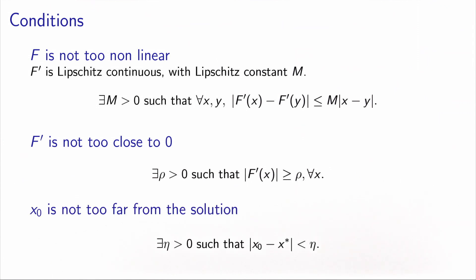The last condition says that the method will work if we start relatively close to the solution — meaning there exists a neighborhood around the solution in which the starting point belongs. This is an annoying condition in practice because you don't know the solution, which is why you use the algorithm. So it will converge to a solution if it starts from a point which is close to the solution.